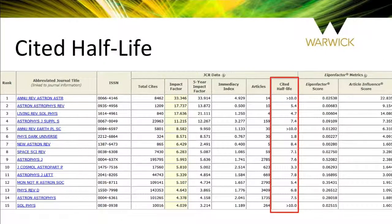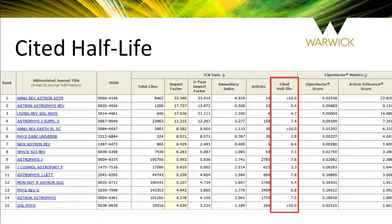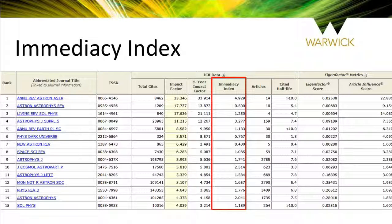The journal's cited half-life is a metric that determines the average age of articles cited by a journal in the current impact factor year. This can help estimate how long a paper published by a specific journal will continue to be cited. The immediacy index measures the average number of times a journal's articles are cited during a single calendar year and gives a sense of whether an article in that journal will gain citations quickly after publication.